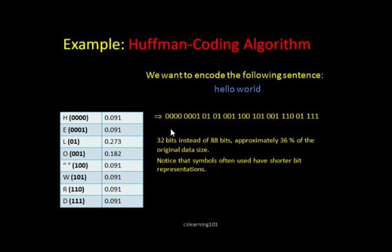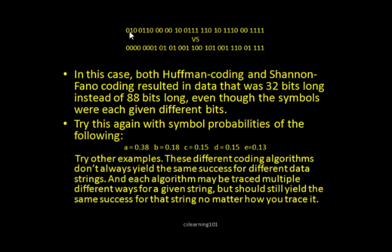So in the end, we get this string, which is 32 bits instead of 88 bits, which is about 36% of the original data size. That's a huge reduction. So to end with, the top one here, this is a string that we got from the Shannon-Fano algorithm. The bottom one here is the Huffman coding algorithm. In the end, in this case, both ended up giving us the same amount of reduction. But different strings would give you different results. You can even see up here, the amount of bits that were used to represent H are both different. And the bits that represent E are different, and so on. So you can see from here, the algorithms are different, even though here it gives you roughly the same result.